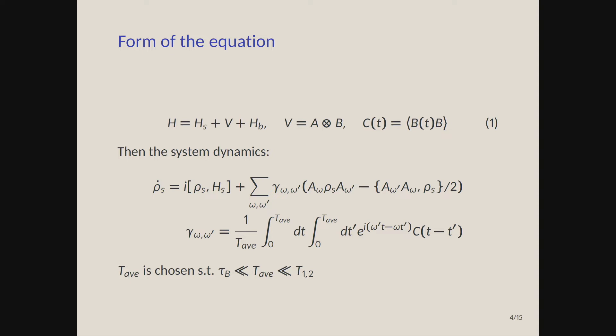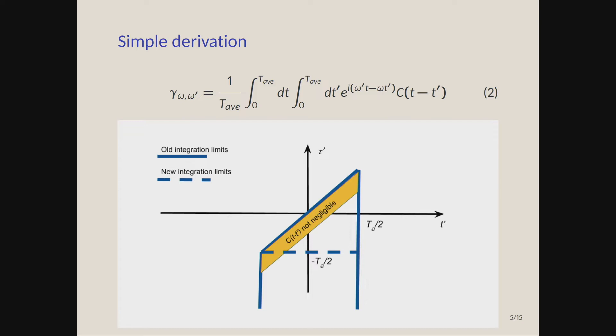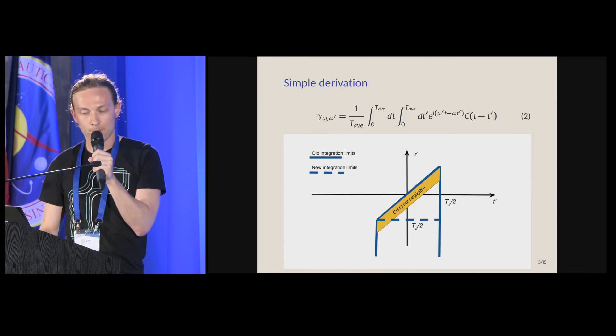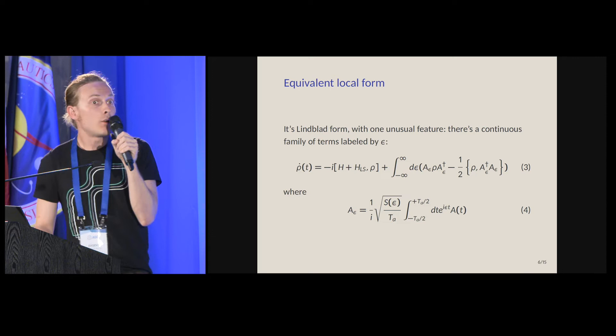We don't actually have that much freedom in this parameter. We need to choose it between those two numbers that are required to be one much smaller than the other, between tau_bath and T_12. Besides time averaging, there is one other trick during the derivation. You start with a Redfield equation, you time average, and then you take a look at your rates. Originally you get this weird trapezoid as the integration domain. You need to cut the lower part of the trapezoid, and after that you get a completely positive map. That's my derivation slide, by the way.